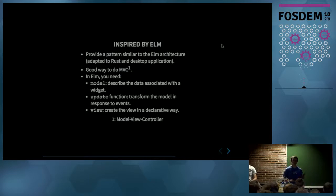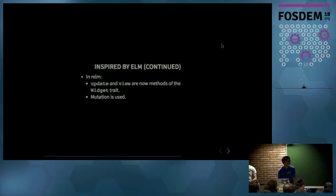And you have an update function that would take the model in response to some event and return the new model. And you also have a view function that describes your view in a declarative way. In Realm, I used that, but I adapted it to Rust. So, for instance, update and view are now methods of a widget trait. And we use mutation when it's convenient.